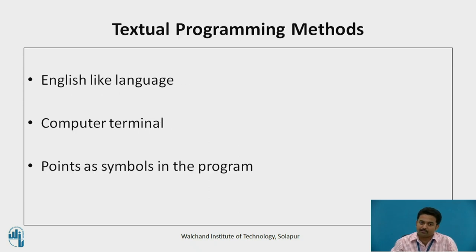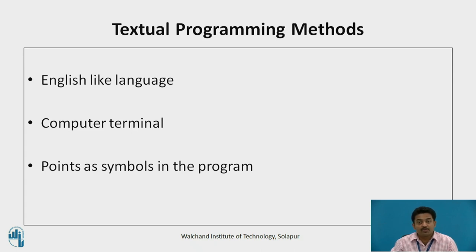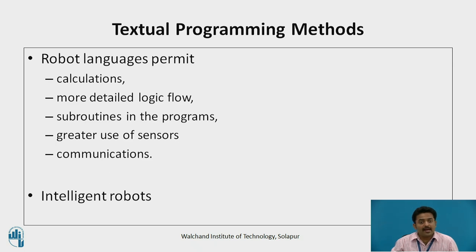Textual programming methods use an English-like language to establish the logic and sequence of the work cycle. A computer terminal is used to input the program instructions into the controller, but a teach pendant is also used to define the locations of the various points in the workspace. The robot programming language names the points as symbols in the program, and these symbols are subsequently defined by showing the robot their locations. In addition to identifying points in the workspace, the robot languages permit the use of calculations, more detailed logic flow, and subroutines in the programs, and greater use of sensors and communications. Accordingly, the use of textual language corresponds largely to the so-called intelligent robots.